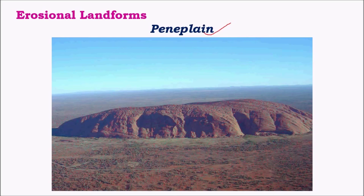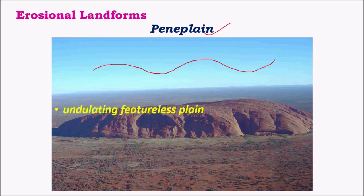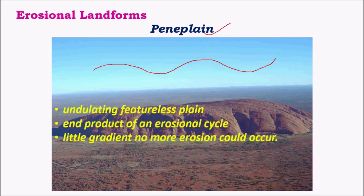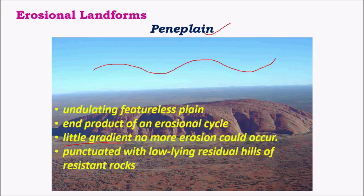Another important landform is the peneplain, formed by both wind and water action, mainly found in arid regions. It is an undulating, featureless plain — featureless meaning no significant relief, and undulating meaning a wave-like pattern over long distances. This is the end product of an erosional cycle, resulting from a very little gradient where over a few kilometers the elevation changes only by centimeters. Few features like resistant rocks remain due to differential erosion. One example is Uluru (Ayers Rock) in Australia, known for its changing colors at different times of day.